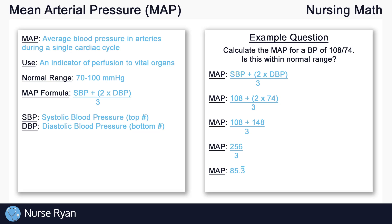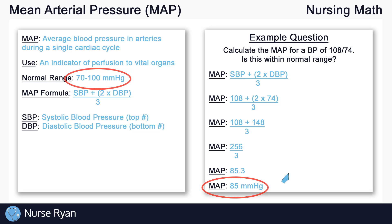We generally round the mean arterial pressure to the nearest whole number, so 85.3 rounds down to 85, and that's the mean arterial pressure — 85 mmHg. And 85 is within what is considered the normal range for MAP, which again is 70 to 100.